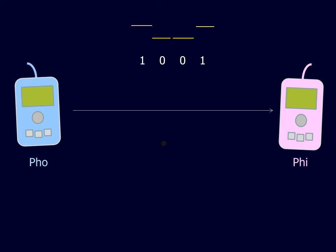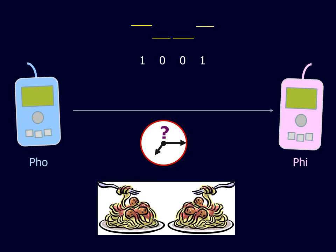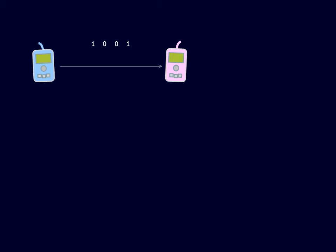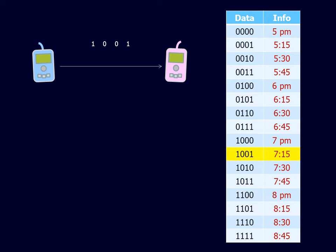In the present example, Pho is suggesting to Phi a meeting time for their upcoming dinner date. The word pertaining to this time must be interpreted using a key that is common to both parties. This interpretation of the code is known as information.